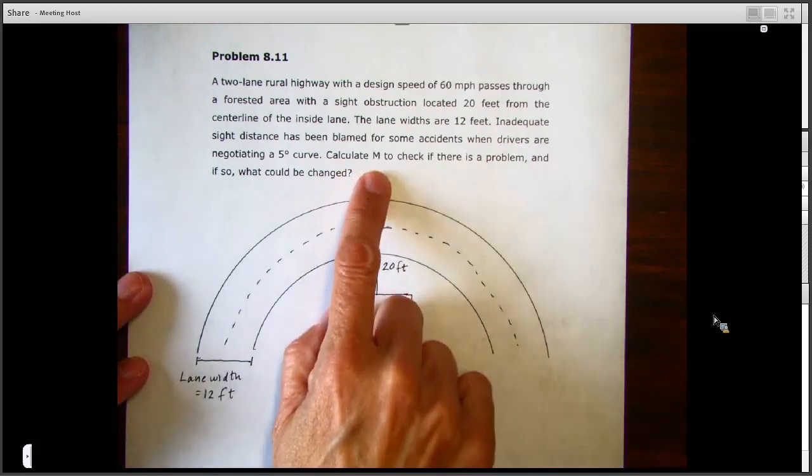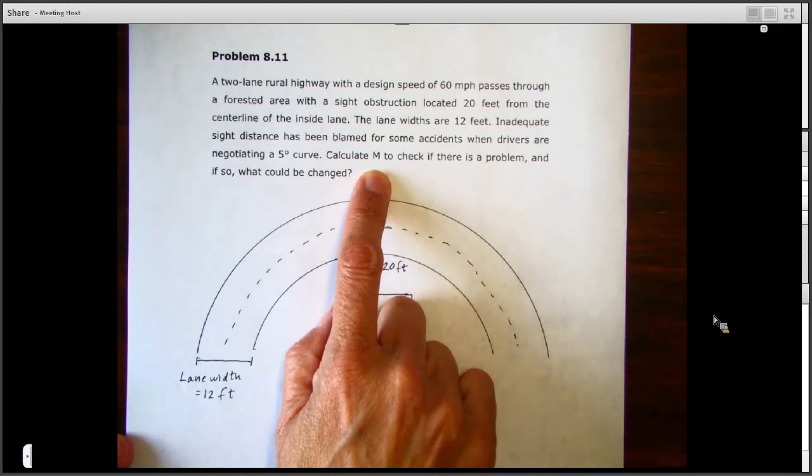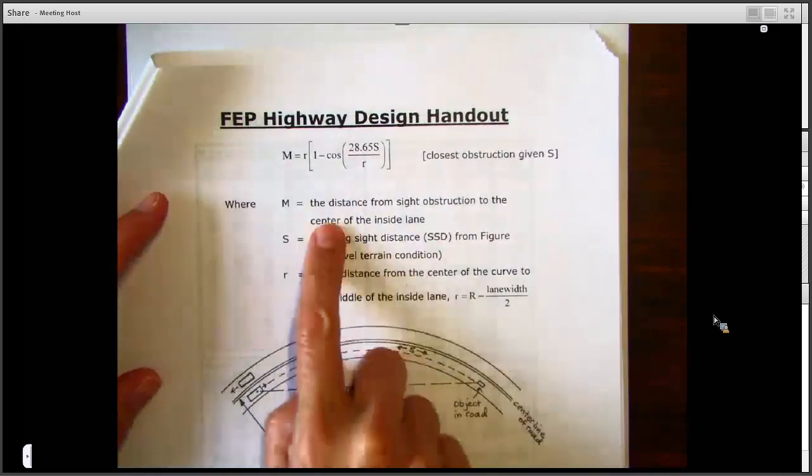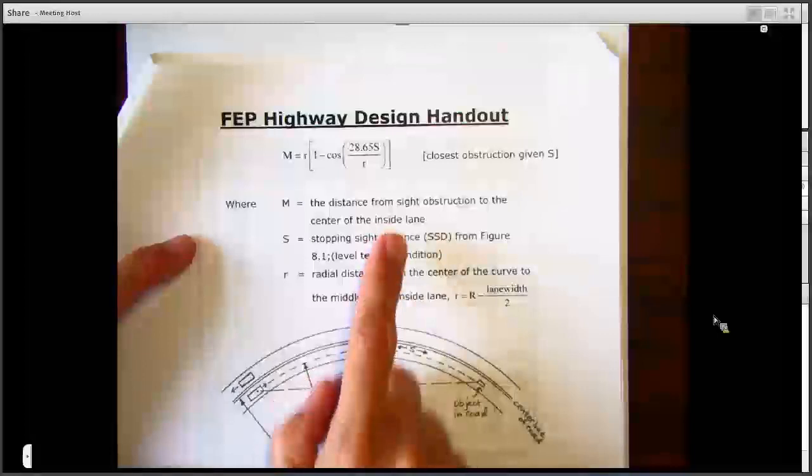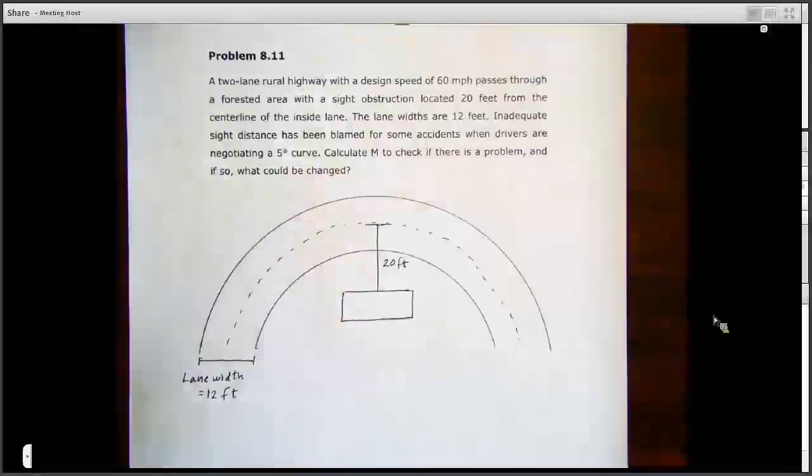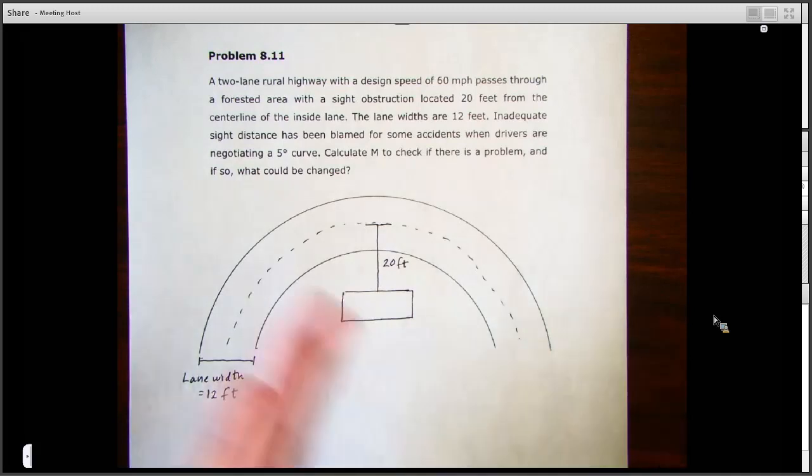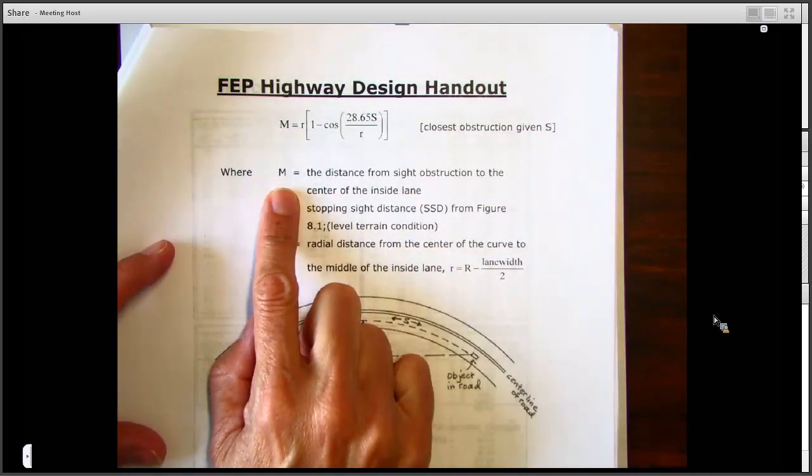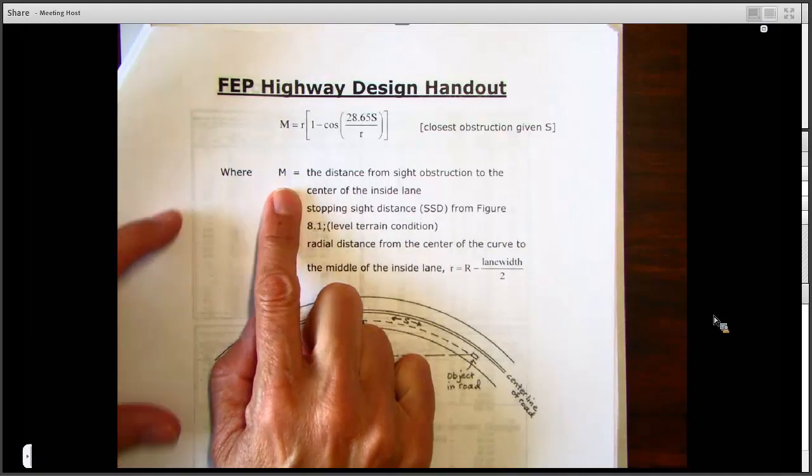It's not drawn to scale. So we're going to calculate this capital M to check if there's a problem, and if so, determine what we could change. Remember, capital M in this case is from our handouts, is the distance from the site obstruction to the center of the inside lane. We're being told that that value is 20 feet. So we want to see, given the geometry of this road layout, is that 20 feet acceptable or not? We're actually going to solve for M and see if the value we get for M is close to 20 feet or not.